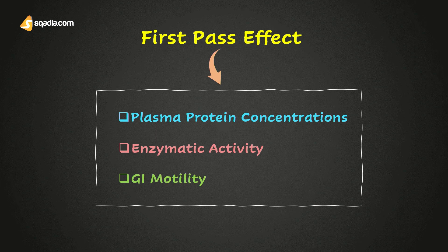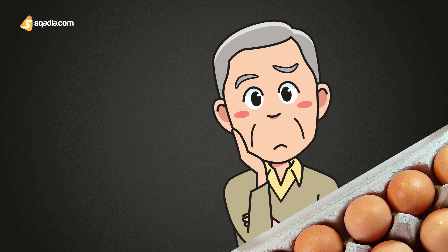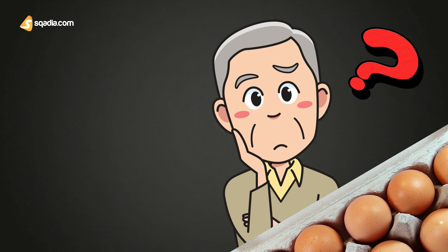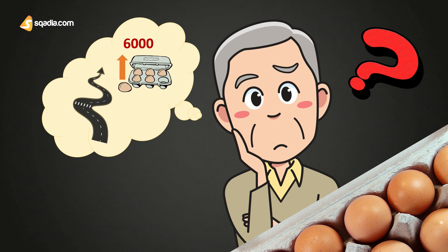Now, you must be wondering what should be done for drugs with higher first-pass metabolism, because we want an appropriate amount of drug to reach the target site. Let's get back to the example of the egg supplier. What will he do if he already knows that the road is bumpy and many eggs might crack on the way? He has two options: either he can change the route, or he can take some extra eggs with him — say 6,000 eggs in total — so that he can deliver exactly 5,000 eggs.